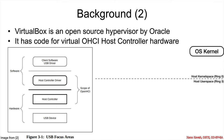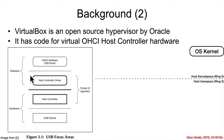Now let's look at it for virtualization. VirtualBox is a hypervisor by Oracle, and it has to virtualize this OHCI host controller hardware. Basically, the software has to pretend to be this side, so that an unmodified operating system — Linux, Windows, whatever — inside the virtual machine has its normal host controller driver in the kernel and can talk to a virtual host controller just like it would talk to a real host controller.